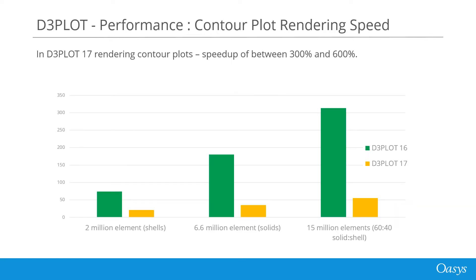In version 17 of D3Plot a lot of the code used to draw contour plots was rewritten and optimized to reduce the time taken to redraw images when the user interacted with them, to carry out operations like dynamic viewing, blanking and picking. We managed to achieve speedups of between 300 and 600 percent depending on the model. These speedups also applied to the playback of animations once they had been created. Having optimized the redraw speed of contour plots, it allowed us to identify another performance issue which we have resolved in version 18.